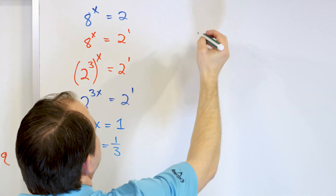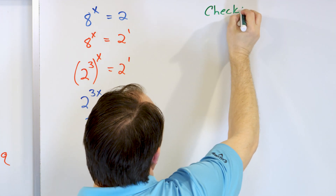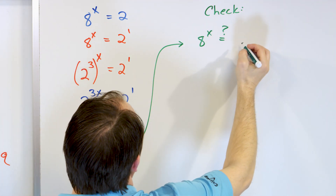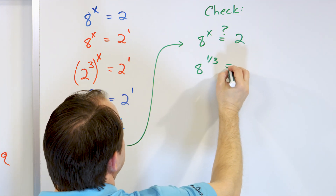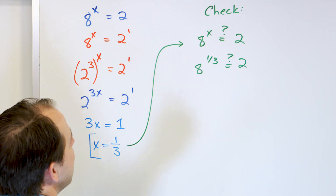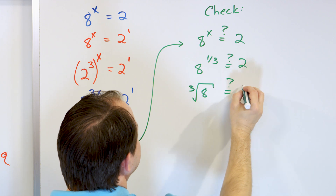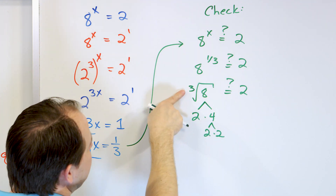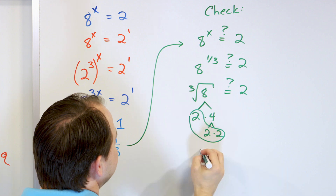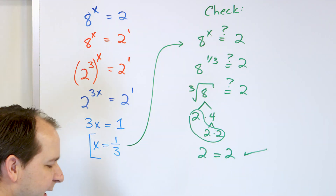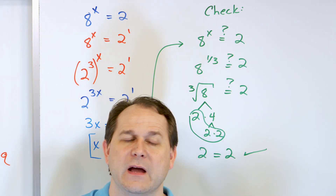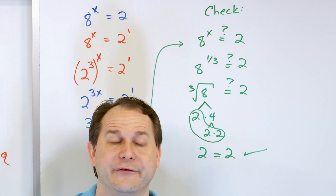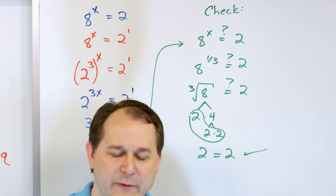It's important to check our work. We take x equals one-third and plug it back in: eight to the power of one-third equals two? A one-third power is a cube root. The cube root of eight — doing a factor tree, two times two times two equals eight — gives us two. So two equals two. The exponent of one-third satisfies this equation.